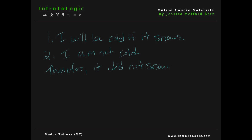Now the first thing we have to do to determine whether this argument is in modus tollens form is to break up each premise and the conclusion in symbolic notation. We do that by labeling each sentence with a symbol or a letter. So the sentence 'I will be cold' can be represented with the letter C, and 'it snows' can be represented with the letter S.